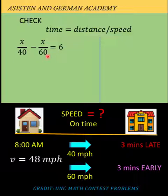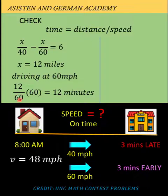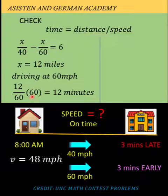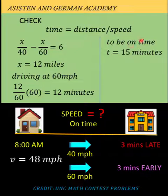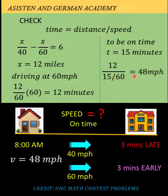Solving for x in this equation, we find that x equals 12 miles. Driving at 60 miles per hour, Early Bird is 3 minutes early, so 12 over 60 — the distance of 12 miles divided by the speed of 60 miles per hour — converted to minutes by multiplying by 60 minutes gives 12 minutes. That means Early Bird is 3 minutes early when he traveled for 12 minutes, so he is on time when he travels for 15 minutes. Traveling the same distance of 12 miles at 15 minutes gives 12 over (15/60), which equals 48 miles per hour — confirming our computed answer.